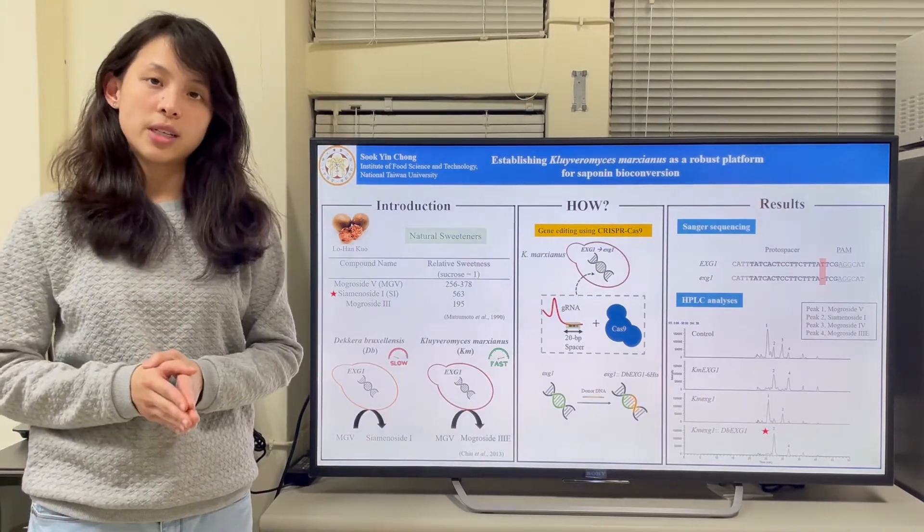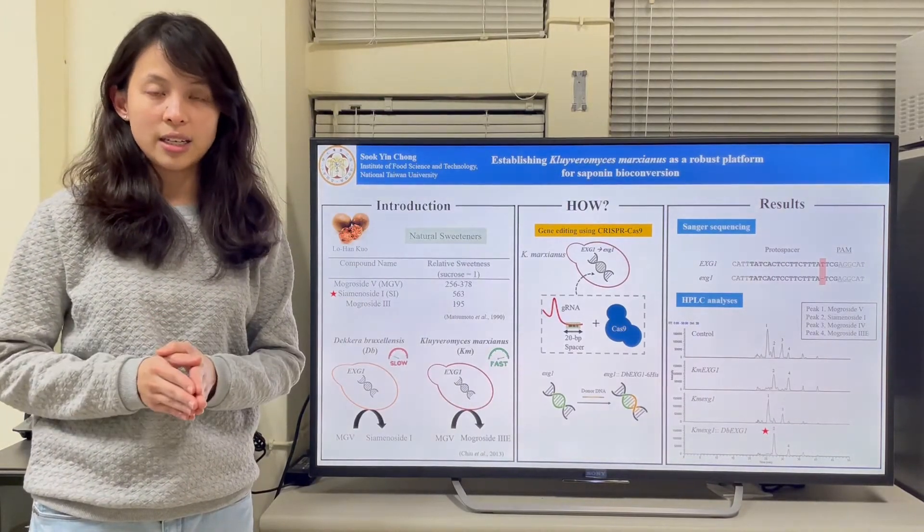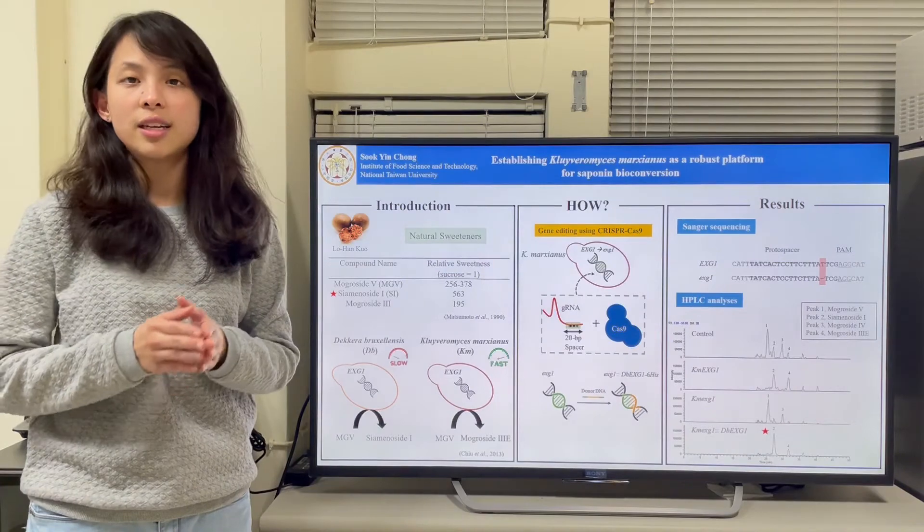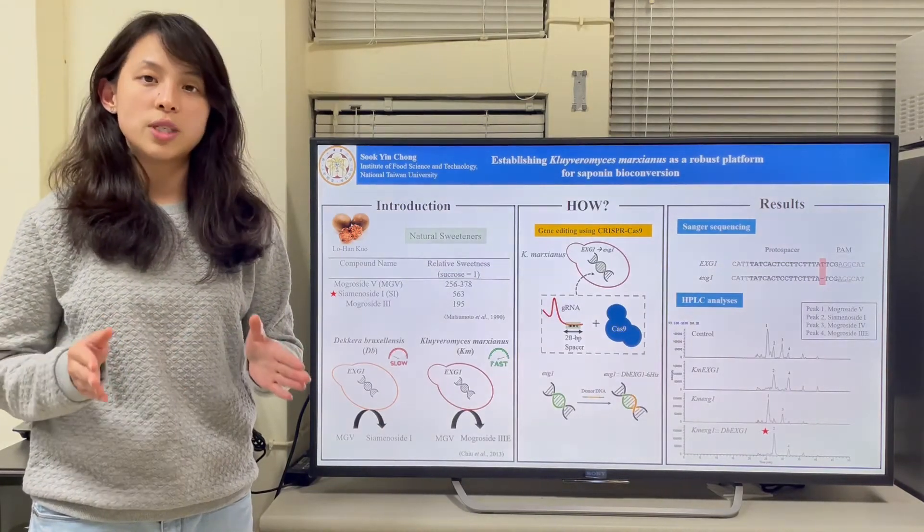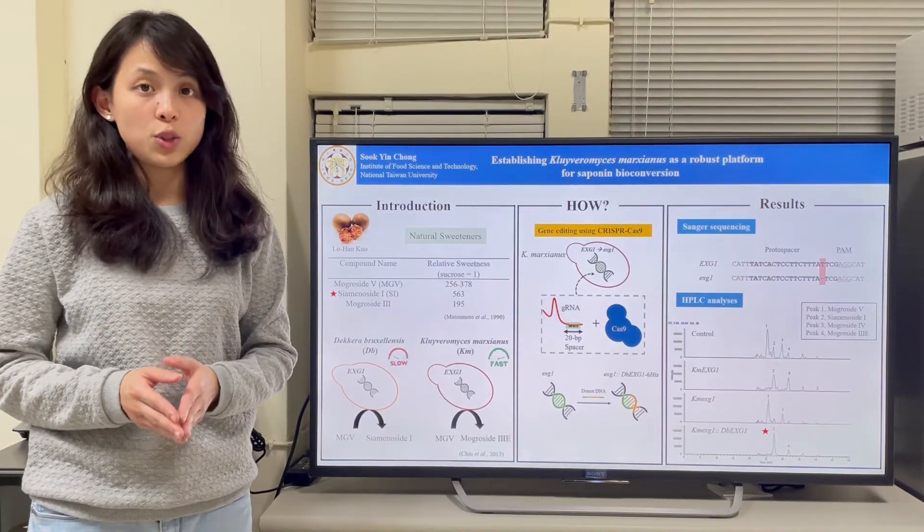First, we set for sequencing to confirm successful editing. With a base missing in the EXG1 sequence after using CRISPR, it causes a frameshift mutation.